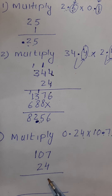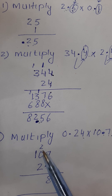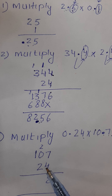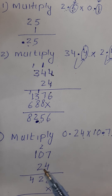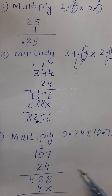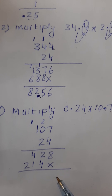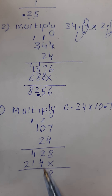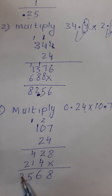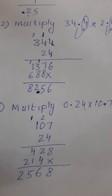7 times 4 is 28, carry 2. 10 times 4 is 40 plus 2 equals 42. 7 times 2 is 14, carry 1. 10 times 2 is 20 plus 1 equals 21. Then 8 from here, 4 plus 2 is 6, 4 plus 1 is 5, and 2 from here.